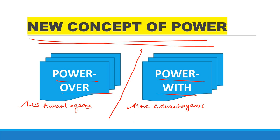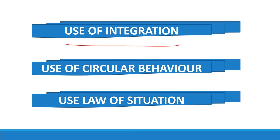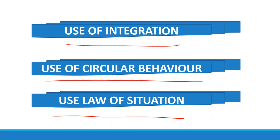When we force someone, it leads to resentment and a bad reaction. So to reduce this feeling of resentment and reaction, we should reduce the concept of power over. The ways to do this are: firstly, we should make use of integration; second, the correct use of circular behavior; and third, the use of the law of the situation.